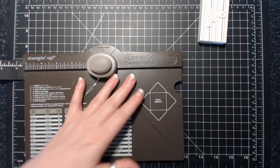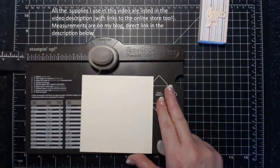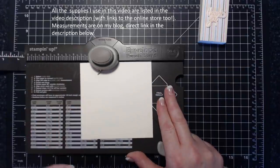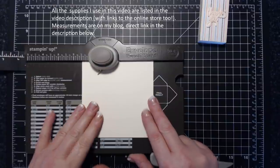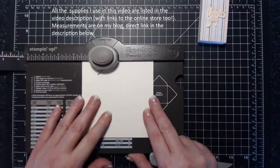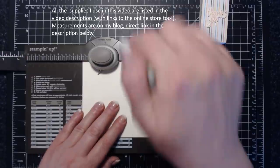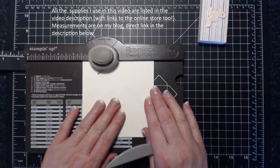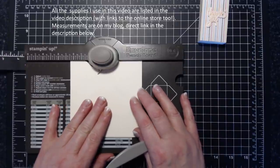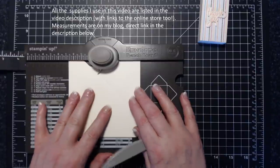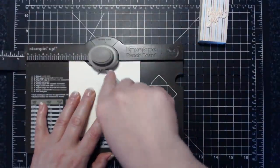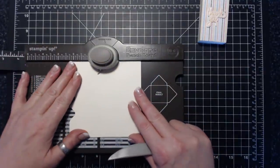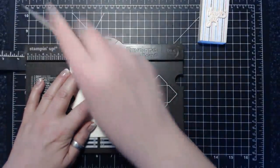Here's my envelope punch board. I have a piece of Very Vanilla cardstock that is four and three-quarters by four and three-quarters. I'm going to punch and score at that one and a half mark. So punch, score. Now we're going to scoot to two and three-eighths and we're going to punch and score. And now all we're going to do is line up our score guide to our score line here and punch and score.